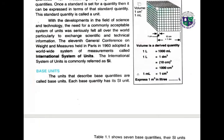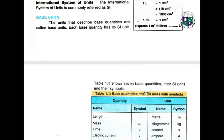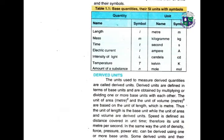The units that describe base quantities are called base units. Each base quantity has its own SI unit. The table of base units: Length — meter; Mass — kilogram; Time — second; Electric current — ampere; Intensity of light — candela; Temperature — kelvin; Amount of substance — mole.